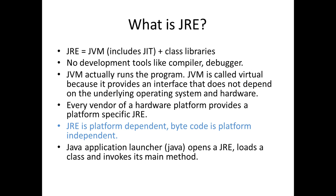The JRE is the vendor's implementation of the JVM. It includes the Just-In-Time (JIT) compiler plus the class libraries. The JRE does not include development tools like the compiler or debugger. To run Java programs, all you need is the JRE — you don't need the JDK. The JVM is called "virtual" because it provides a platform-independent interface that can interpret your bytecode.